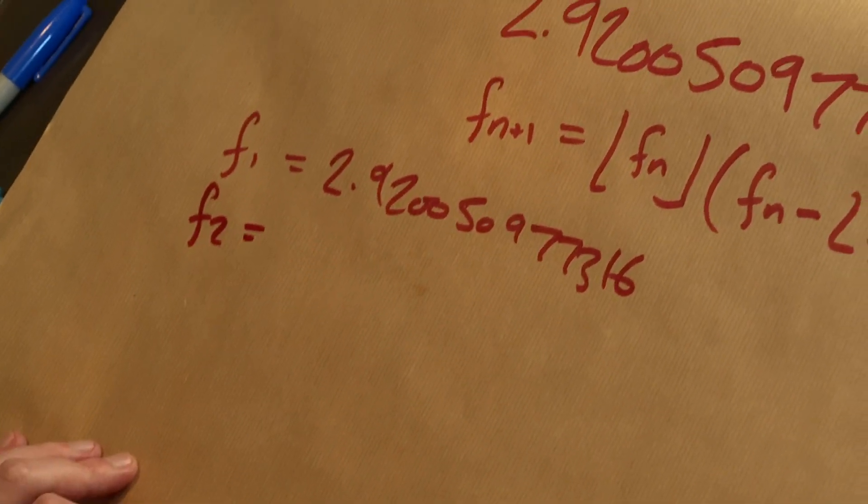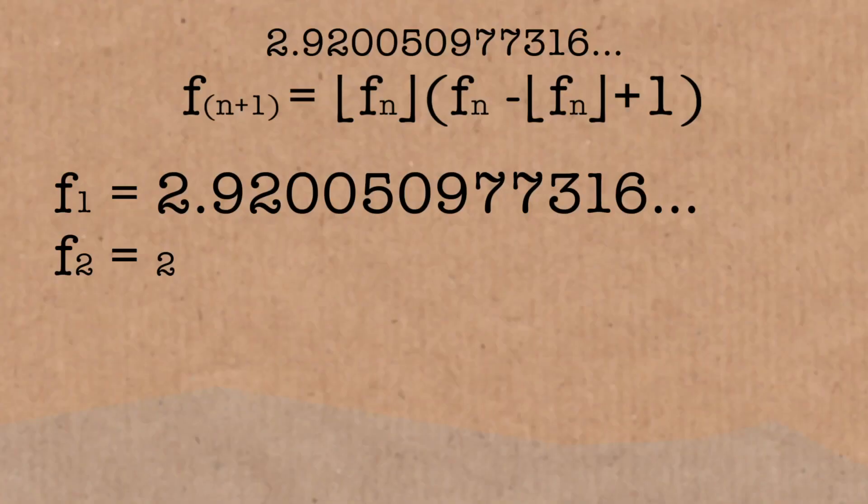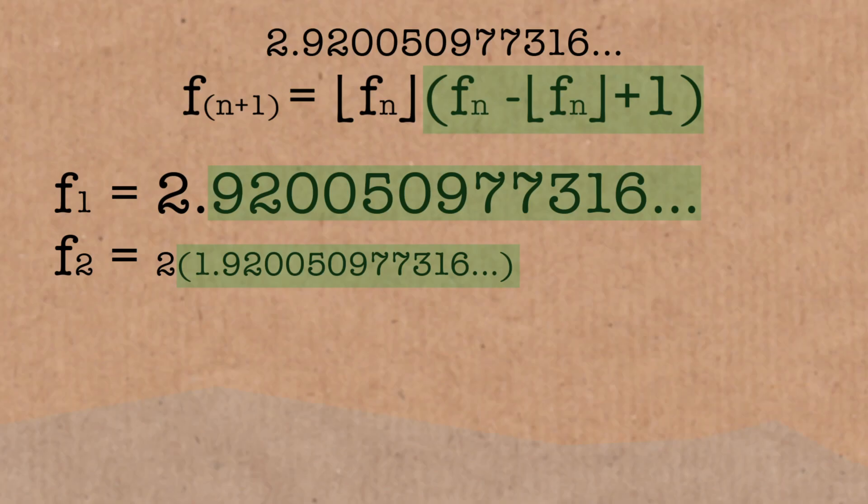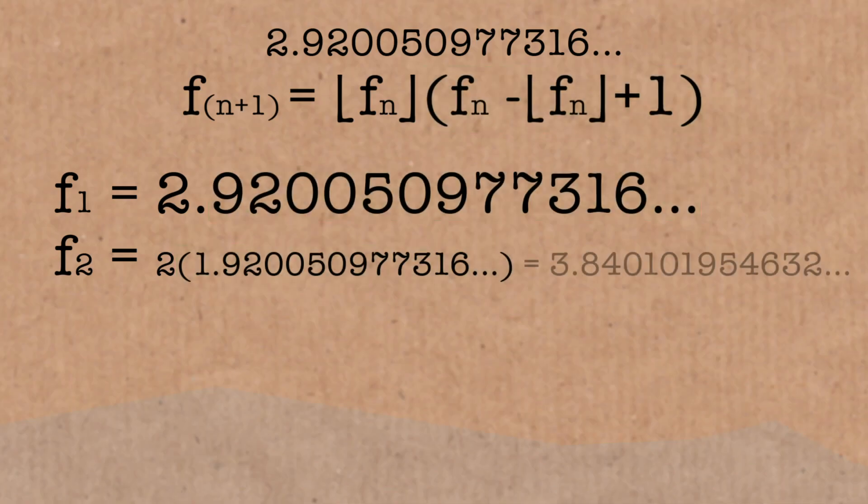Great, let's try the next number in my sequence. I've got my formula here, just saying take the previous number, round it down, so it means two, take the decimal part and add one, so it's going to be multiplying by this, 1.9200, and the rest. That is going to give me the next number, it's 3.8401019, and stuff. But that's the next prime number we were after, it's three.